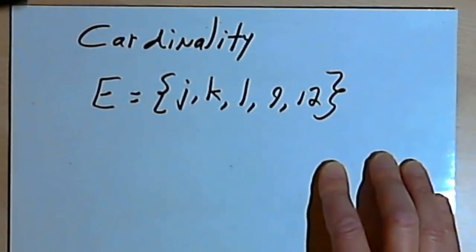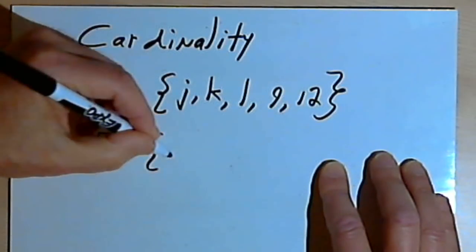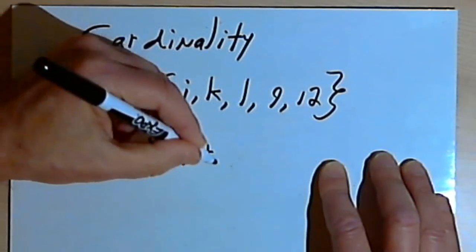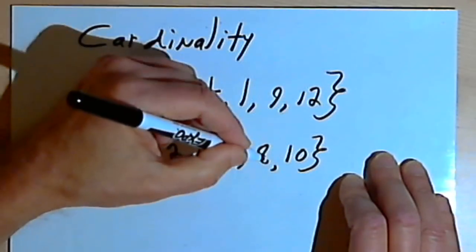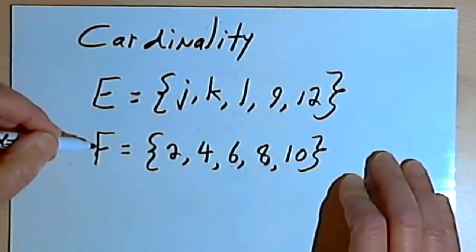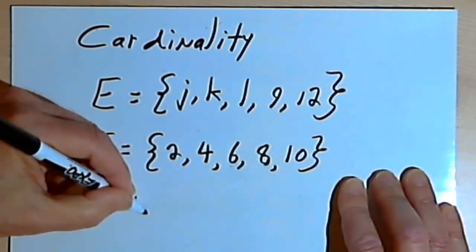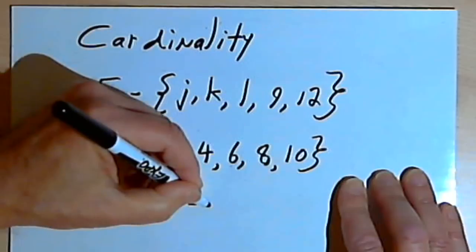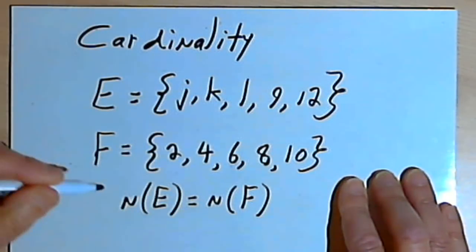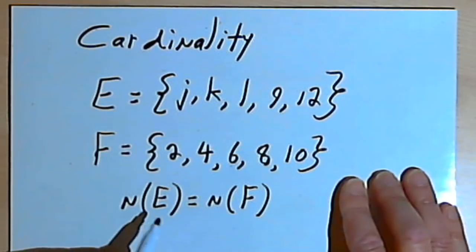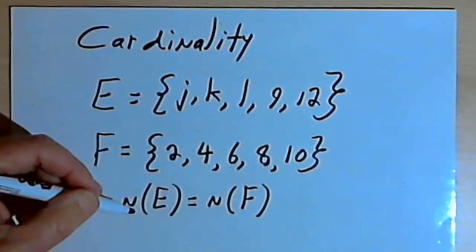We could have two sets with the same cardinality. So set F might contain 2, 4, 6, 8, and 10 — also 5 elements. So they both have the same cardinality. We can say that the cardinality of set E equals the cardinality of set F. And basically this would be another way of saying that they're both equivalent sets, or that they have a one-to-one correspondence to each other.